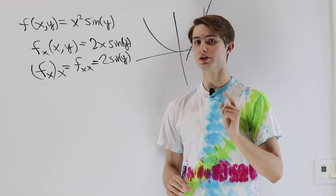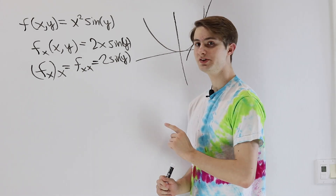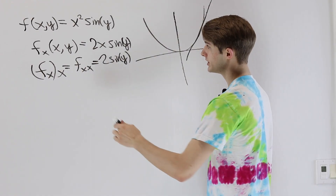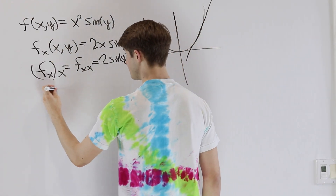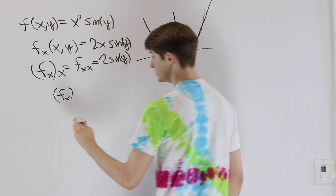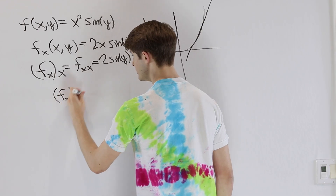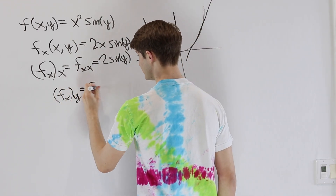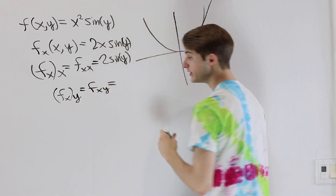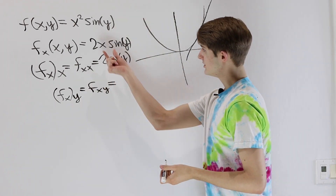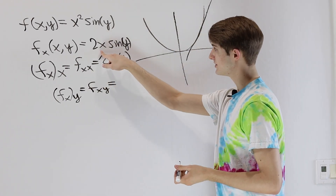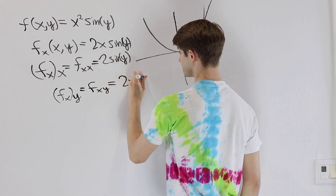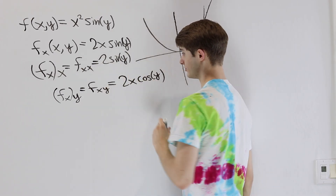Where things get more interesting is when we look at mixed partial derivatives. If we take f_x and then take the partial derivative with respect to y — also written as f_xy — we treat x as a constant and differentiate with respect to y, which gives us 2x times cos(y).